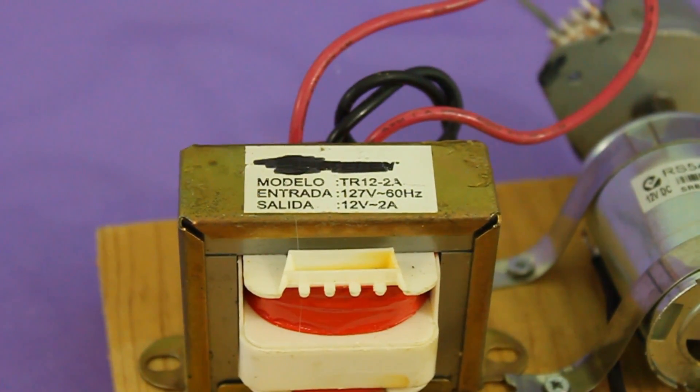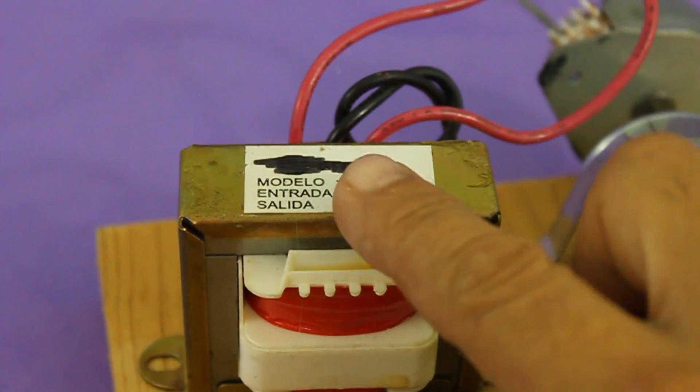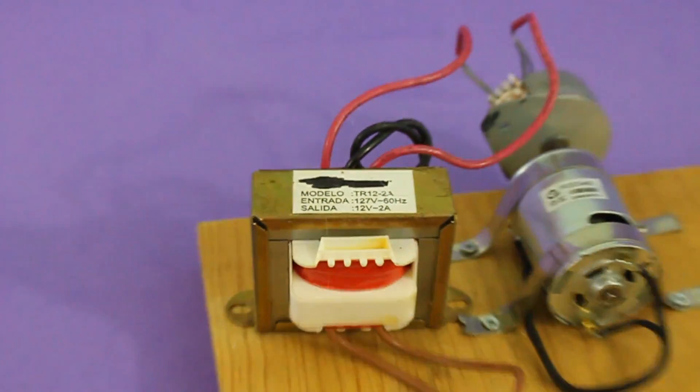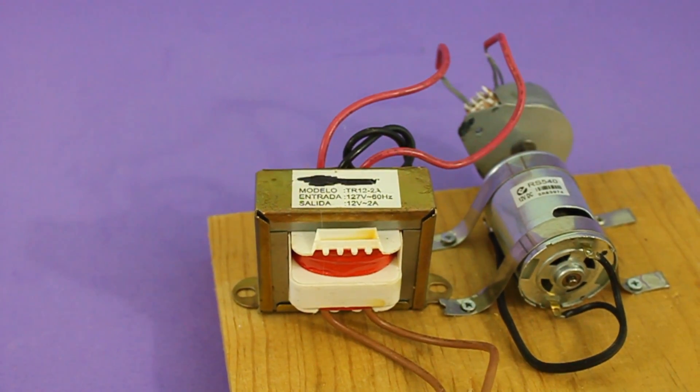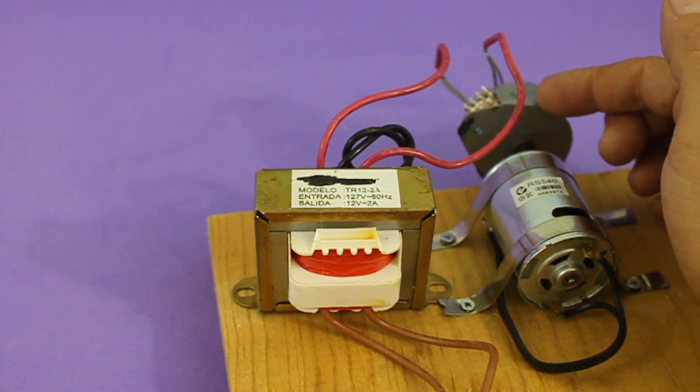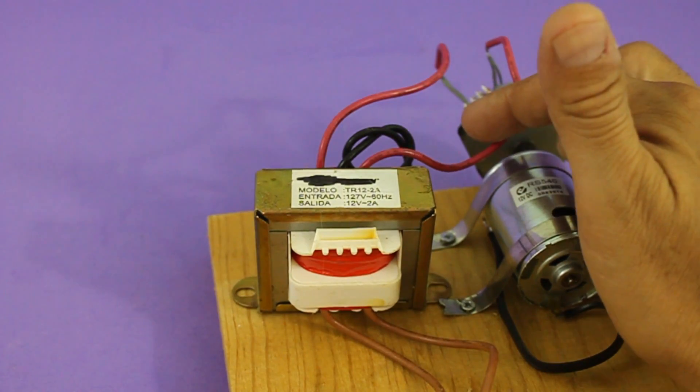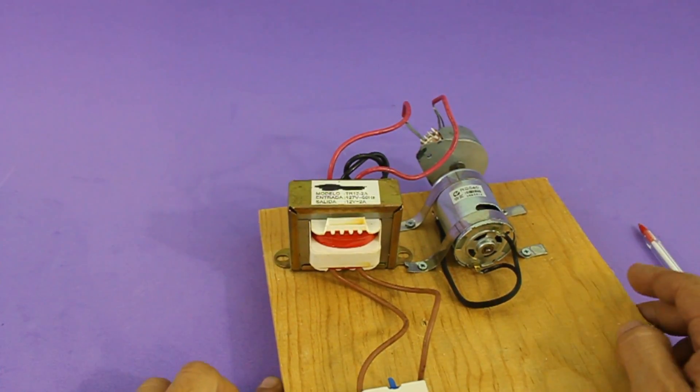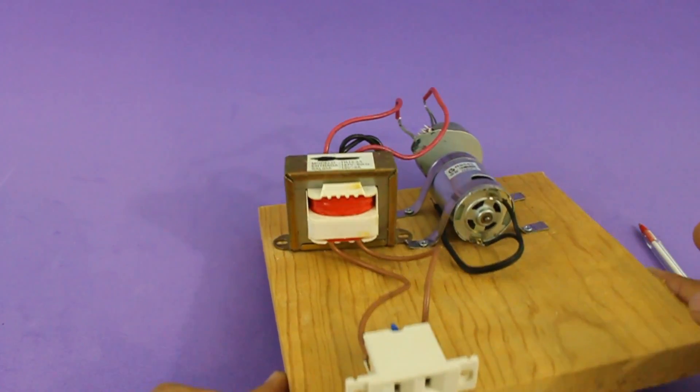I am using a standard transformer, 127 to 12 volts, and I am connecting the transformer in reverse. The output of the alternator goes to the primary. In the secondary we have the output of the transformer.